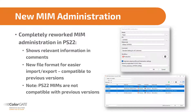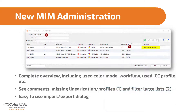Our MIM administration has been completely revised. You can now leave relevant information as comments. A new file format has been introduced for import and export. This is compatible with previous versions — version 22 can use MIMs from, for example, version 21. Please note that older versions cannot use version 22 MIMs. The new MIM administration is also much clearer than its predecessor. You can see commands, linearizations and profiles directly in a list and filter them as well.